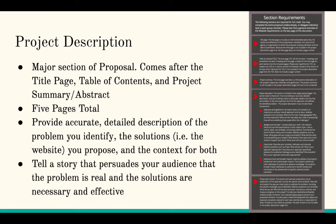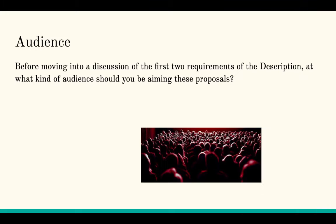Now I want to talk about objects and significance. The whole project description is five pages total. Its overall goal is to provide an accurate, detailed description of the problem you identify, the solutions — specifically the website you propose — and the context for both. You want to tell a story that persuades your audience that the problem is real and that the solutions are necessary and effective.